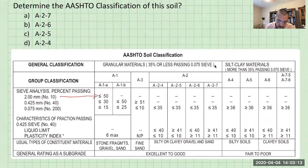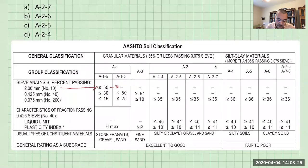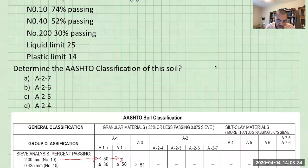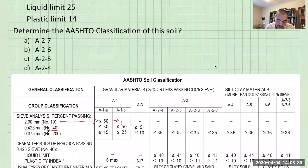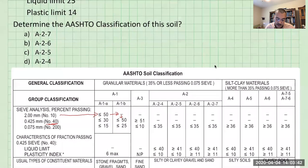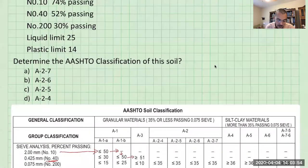Now 74 percent is greater than 50. So we can't use this. So we'll move over to A1B. Then we'll go down. And notice when we go down, we're not no longer looking at the number 10 sieve. Now we're looking at the number 40. So our number 40, we have 52 percent. Now 52 percent is greater than 50 percent. So we can't use this. So again, we'll go to the right hand side. And then we have 52 percent is greater than, so that checks out for the number 40 sieve.